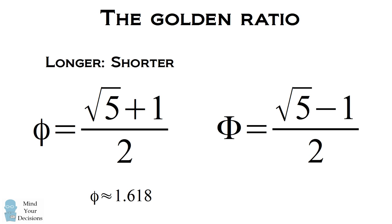But you could equivalently look at the golden ratio as the capital Greek letter phi, the square root of five minus one over two. This is the ratio of the shorter side to the longer side, approximately 0.618.